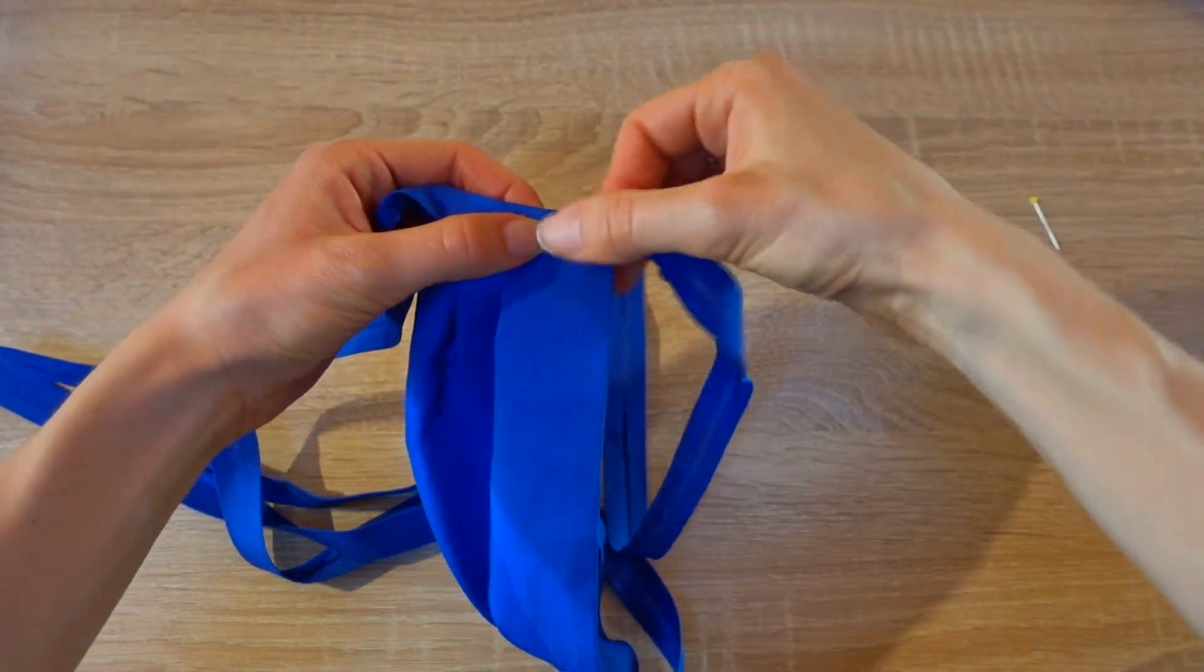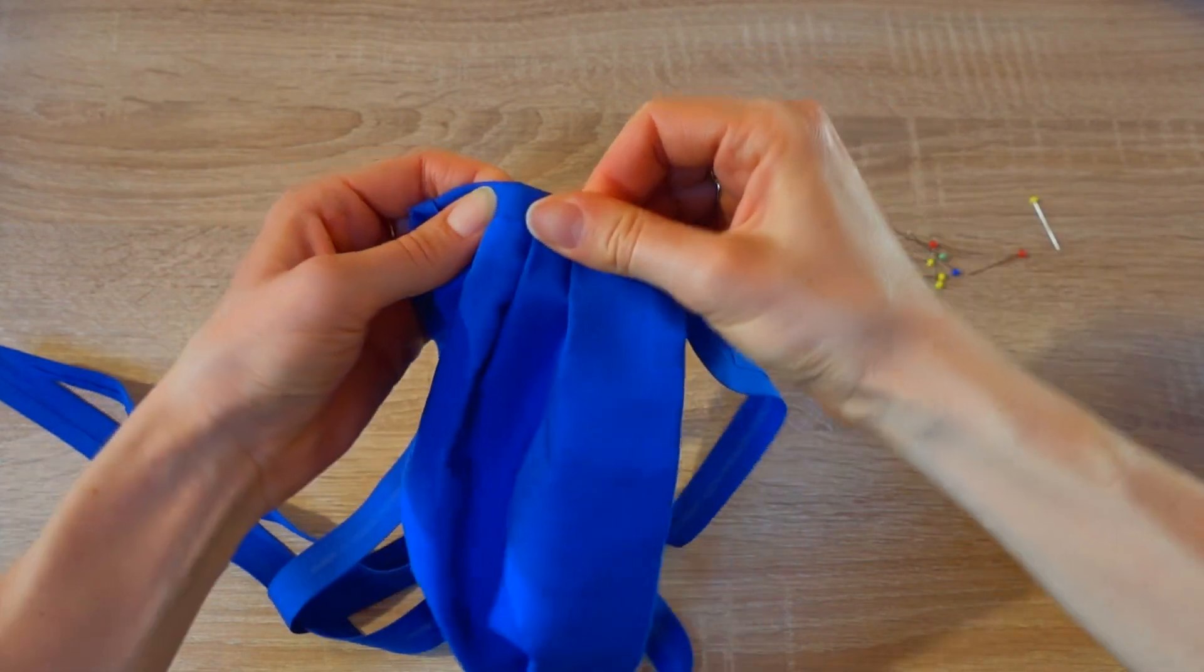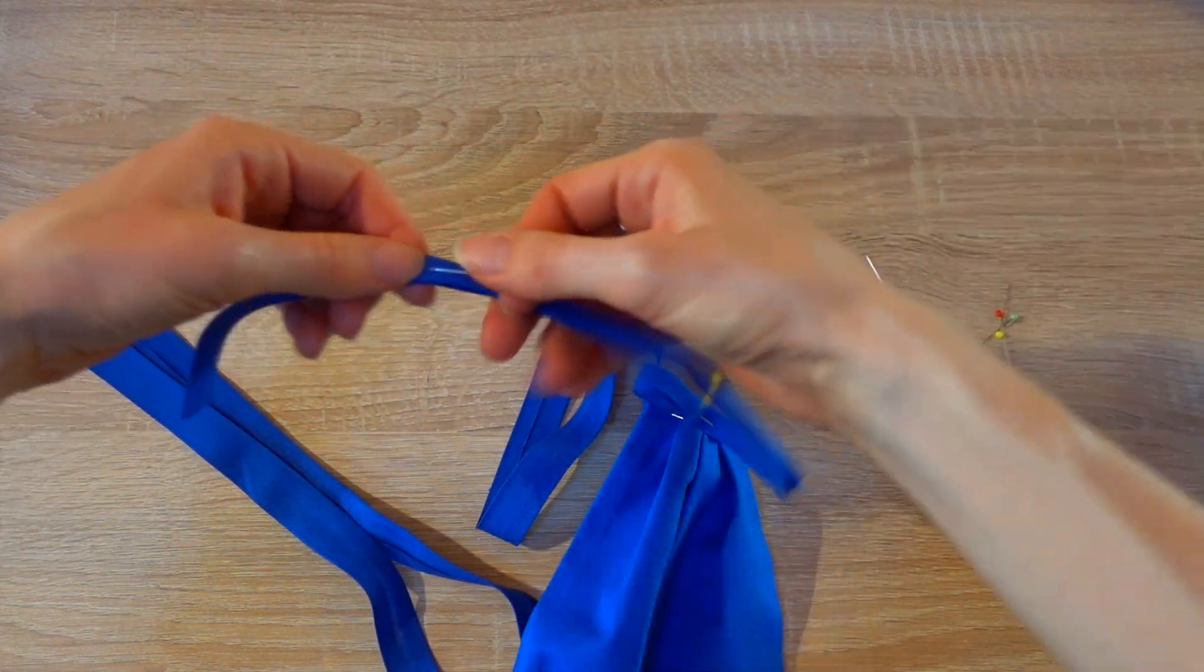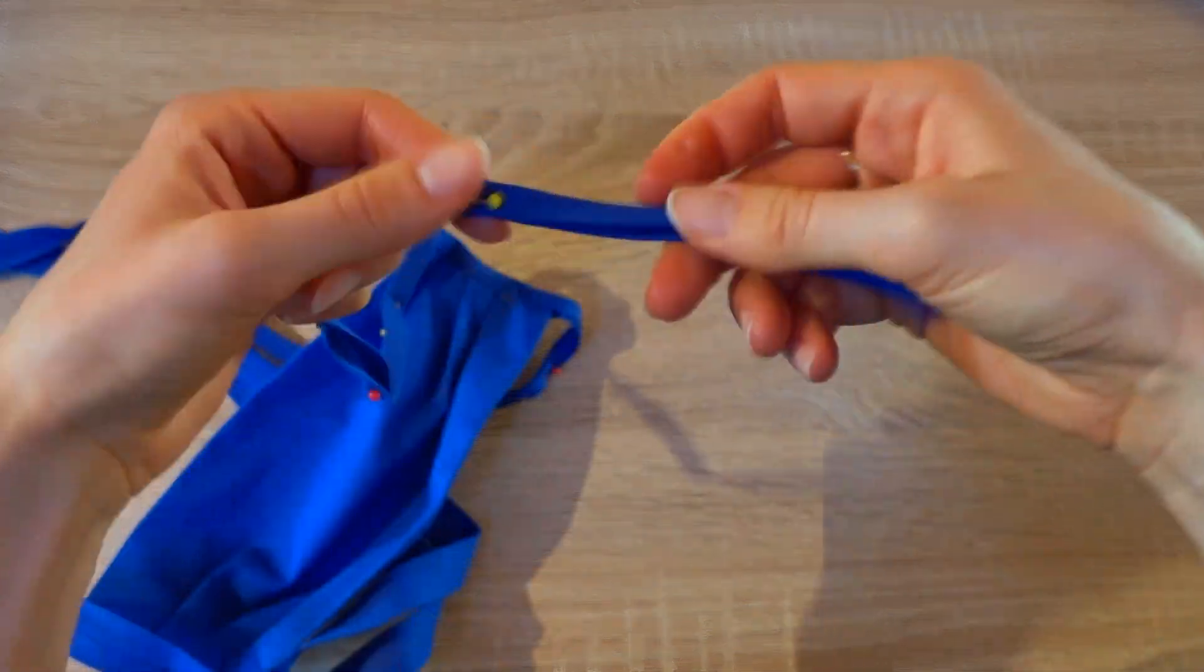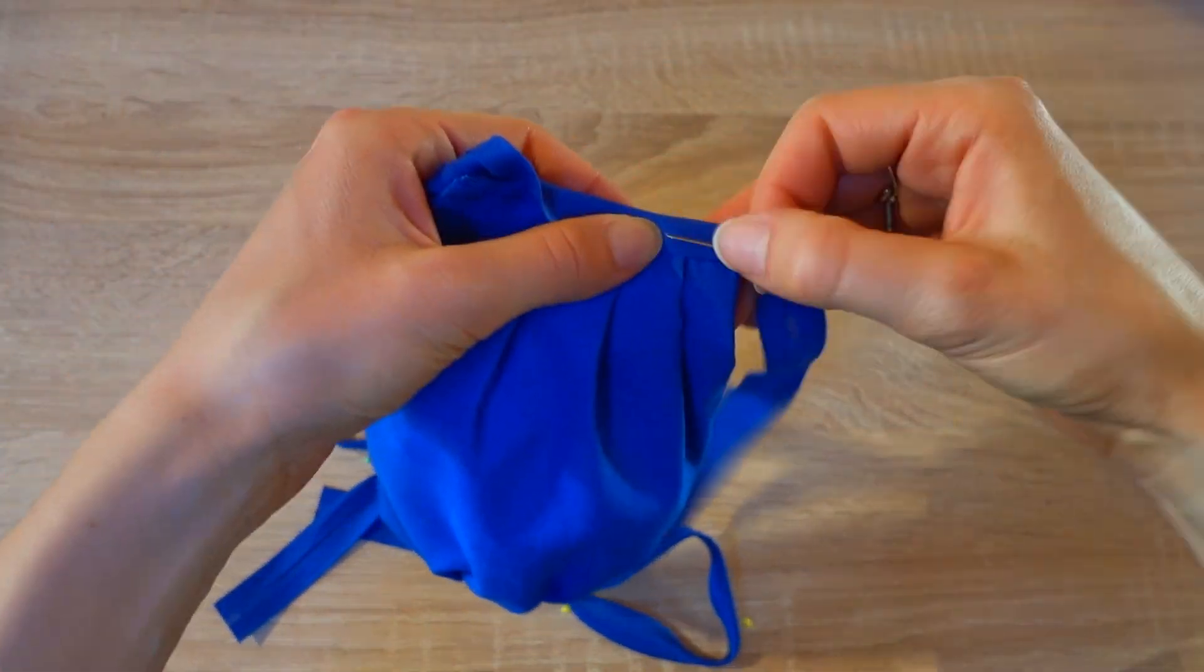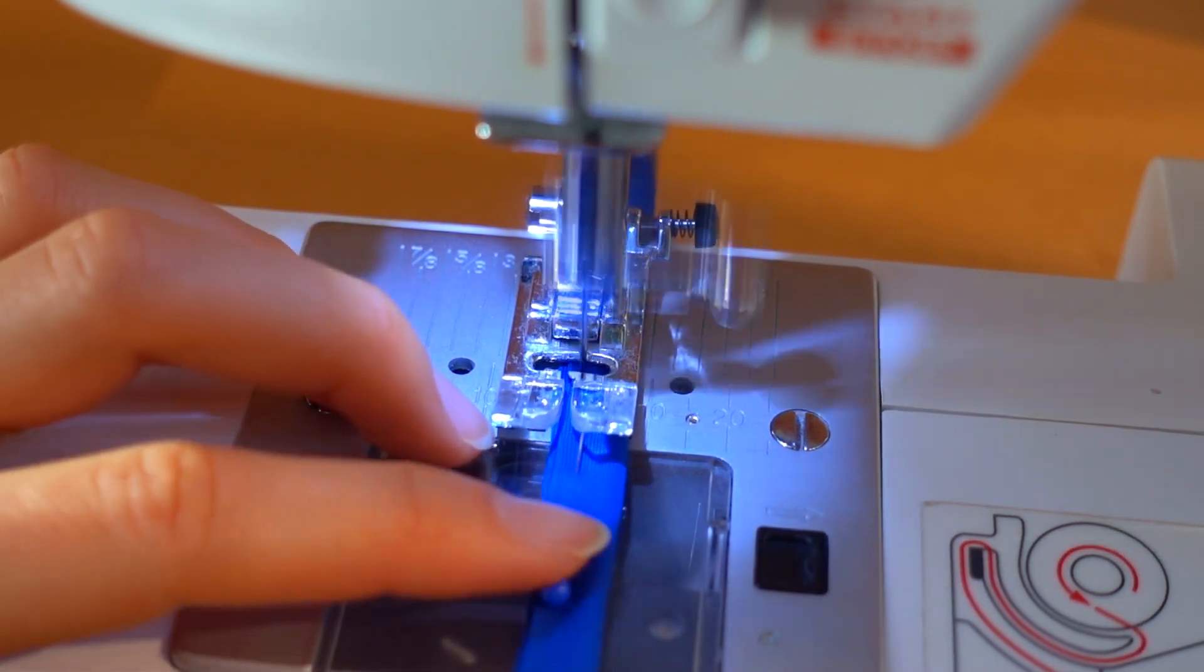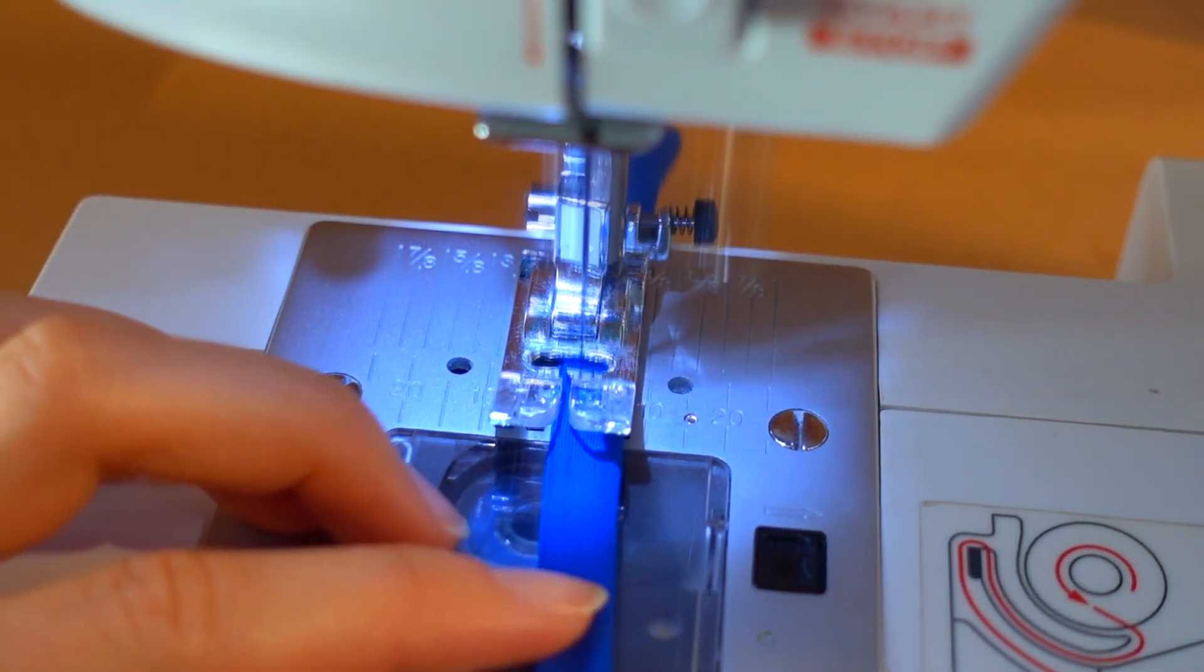Fold the bias tape over the edge of the mask and pin it in place. Fold the rest of the bias tape in half and pin it in place. Do the same on both sides of the mask and with both tapes. Sew the bias tape together and secure the stitches at the beginning and at the end. The bias tape is not only good to use as ribbons to tie the mask to your head, it also binds the edges of the mask in a very nice way.